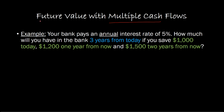What we're going to do is first consider a situation where we are calculating the future value of multiple cash flows, and then we're going to take a look at an example in which we're doing present value. So take a look at this example. Let's suppose that your bank pays an annual interest rate of 5%. How much will you have in the bank three years from today if you save $1,000 today, $1,200 one year from today, and $1,500 two years from today?